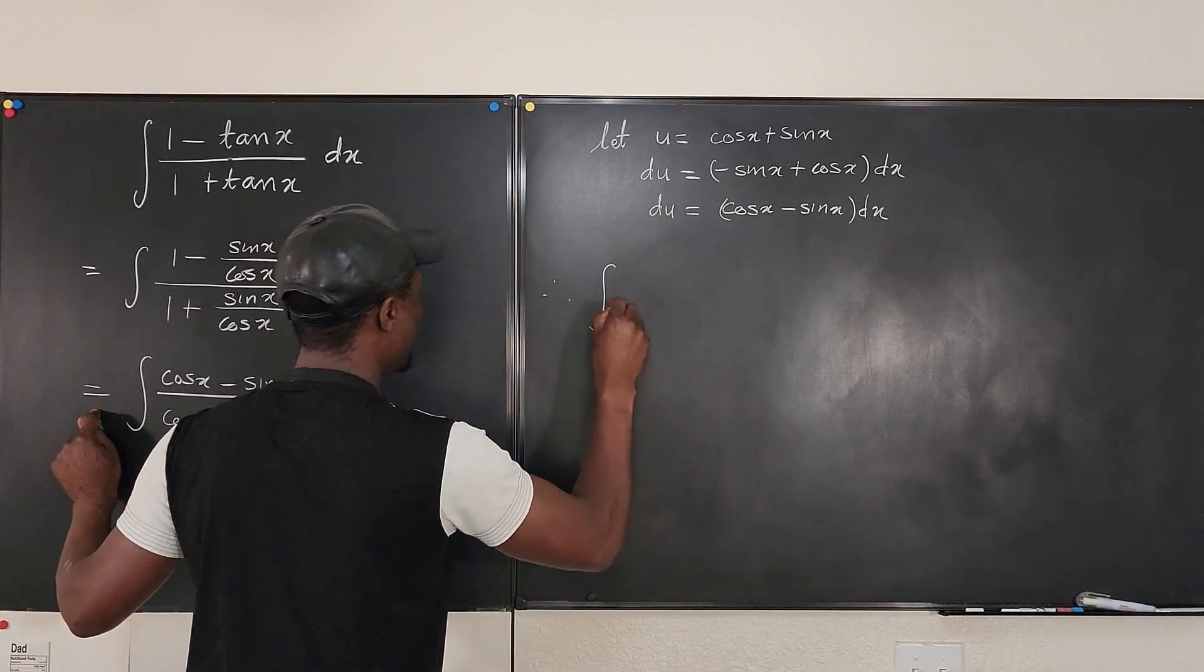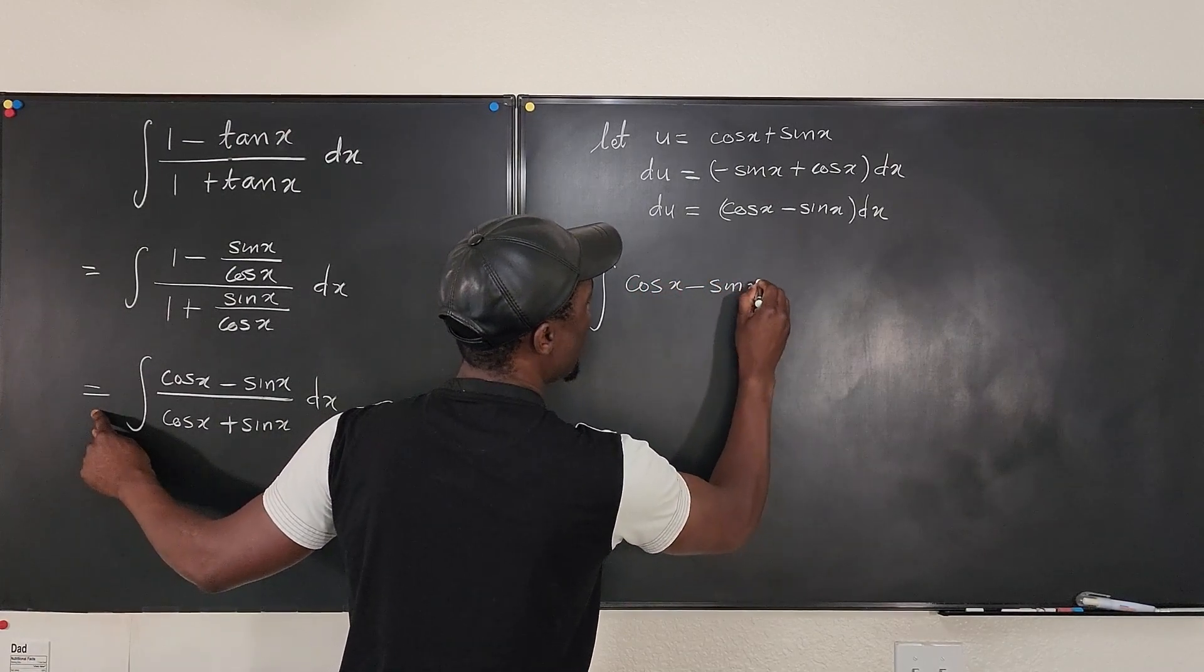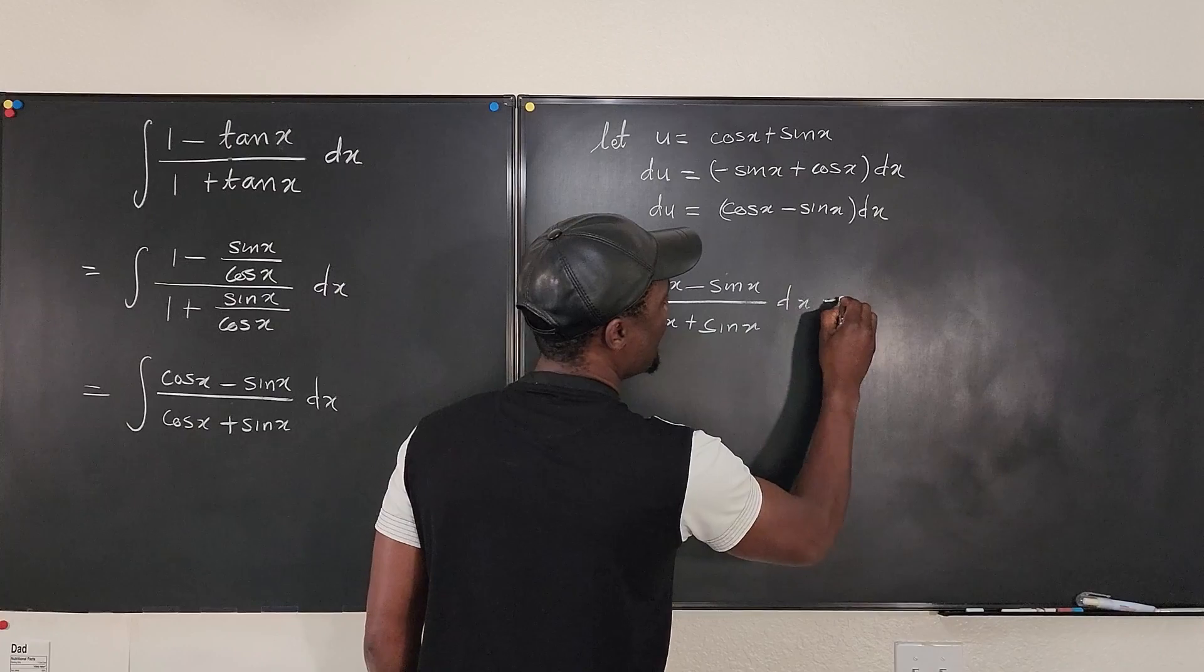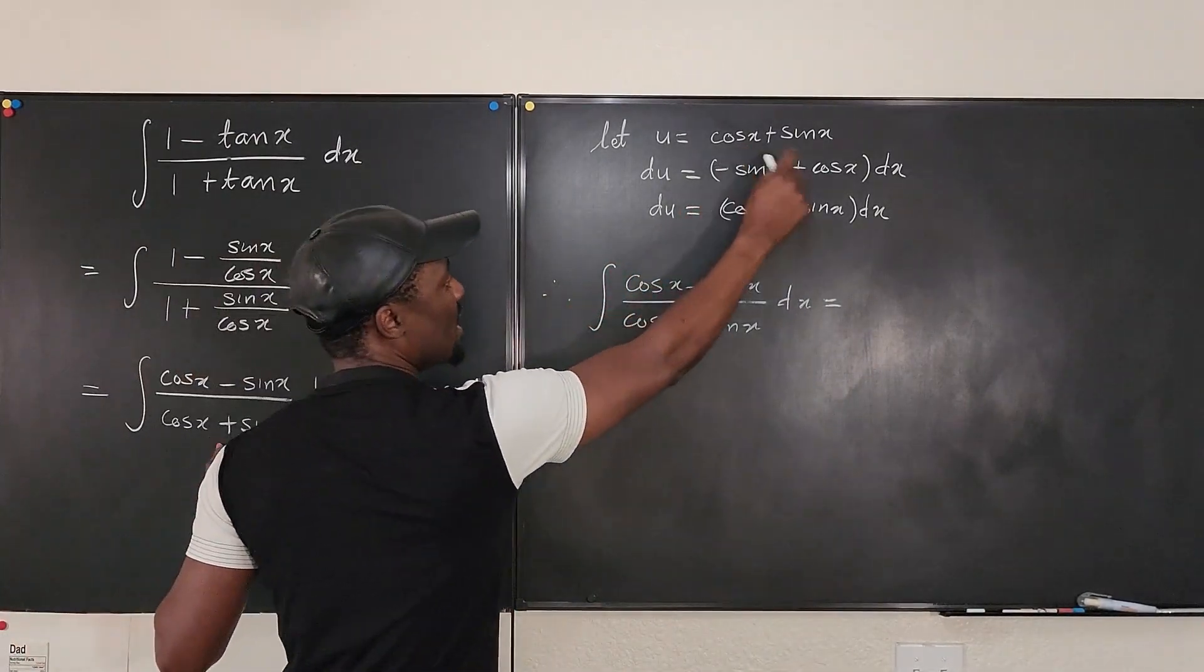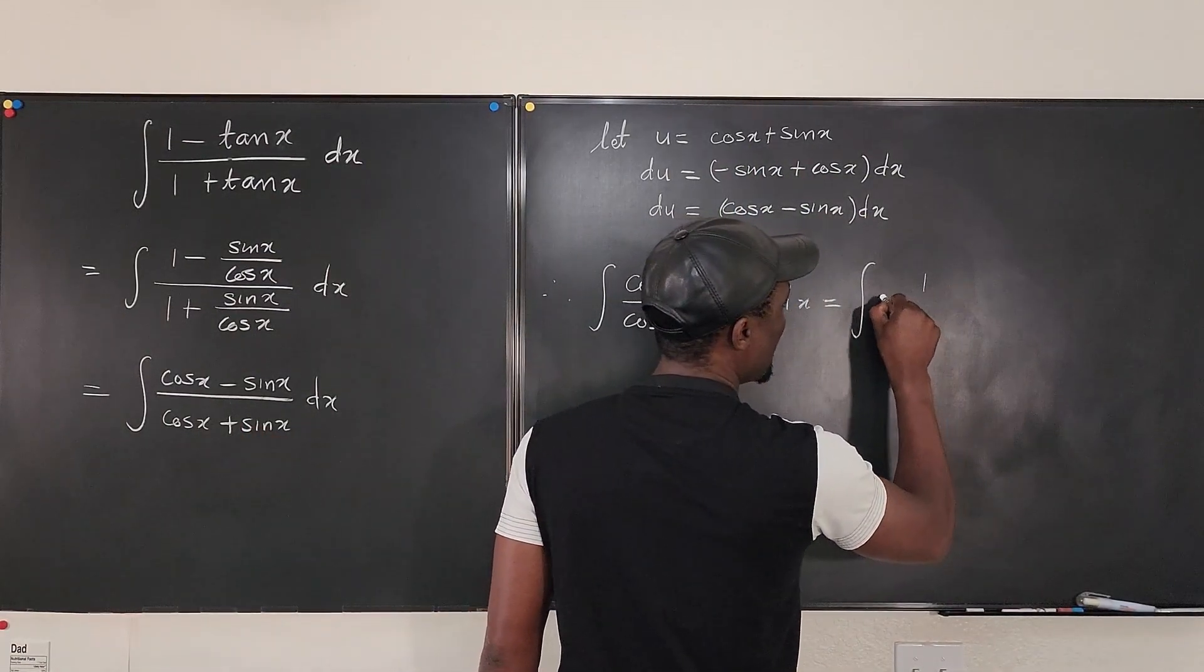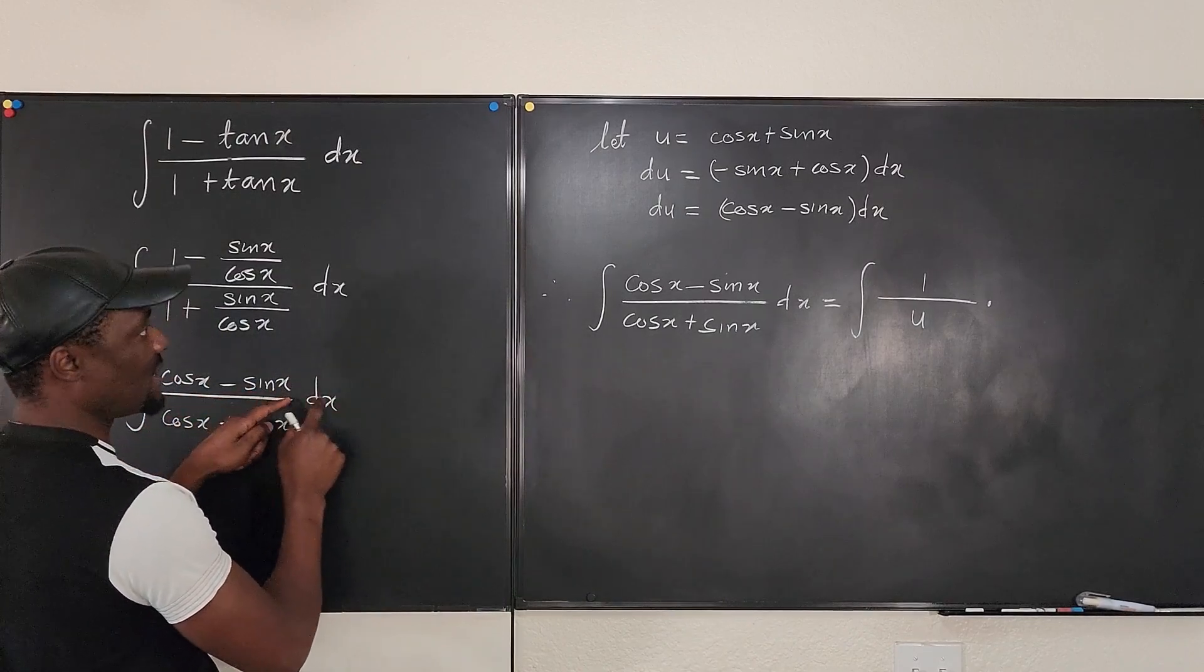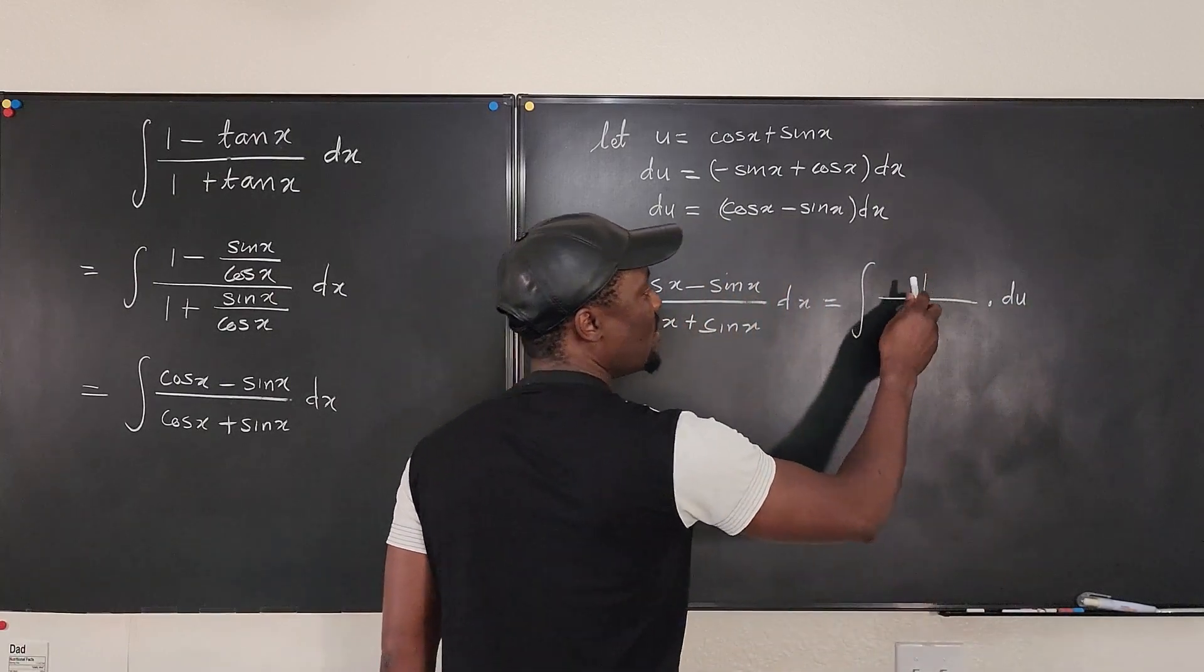So we can say, therefore, the integral of cosine x minus sine x over cosine x plus sine x dx can be written as, look, we said this is our u. So we're going to say it's the same thing as the integral of 1 over u multiplied by, remember, this whole top part is the same thing as du. Or you can put the du here.